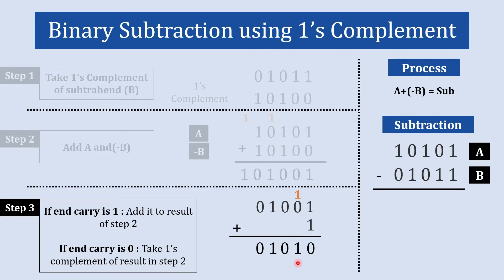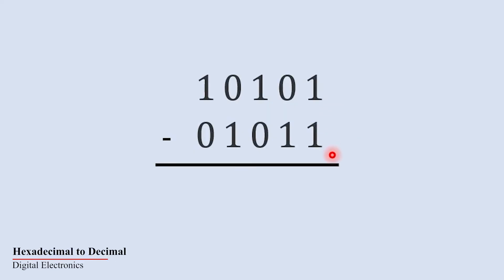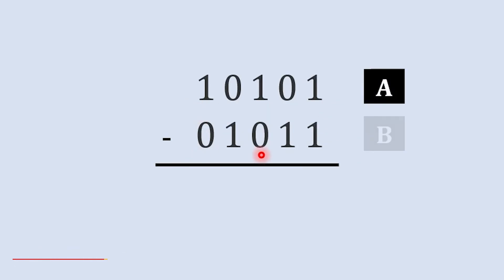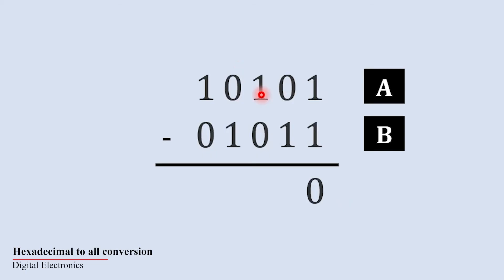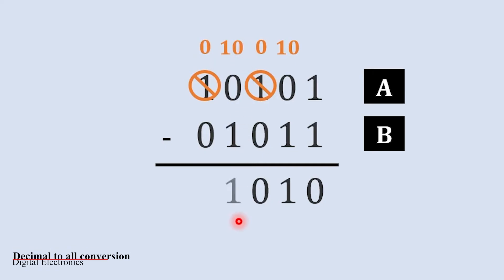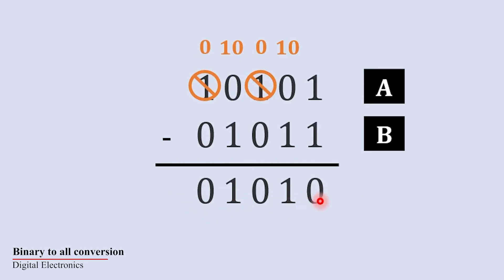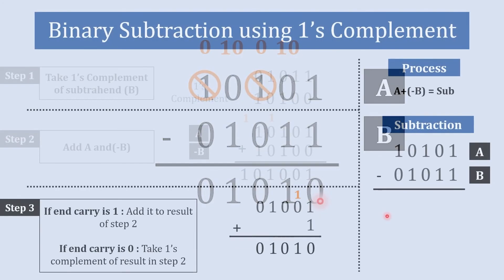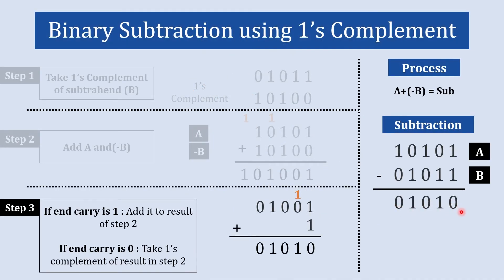Now let us quickly verify the answer using regular subtraction. Performing A minus B directly: 1 minus 1 is 0; 0 cannot subtract 1 so we borrow, getting 10 minus 1 = 1; then continuing with borrows and subtractions, the final result is 0 1 0 1 0. Comparing both answers, they are the same, which proves our one's complement result is correct.